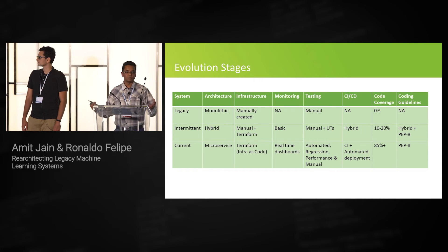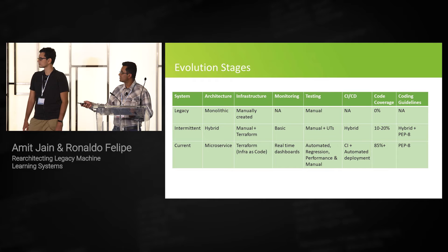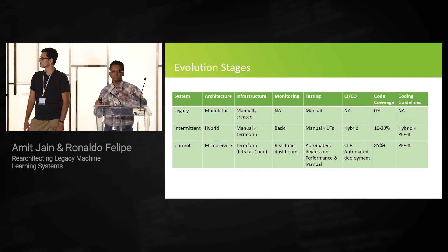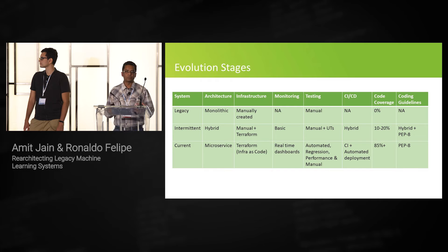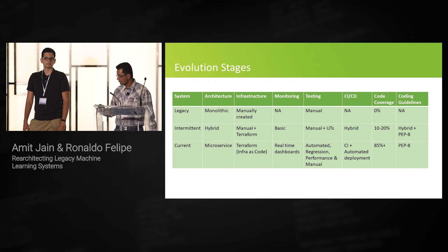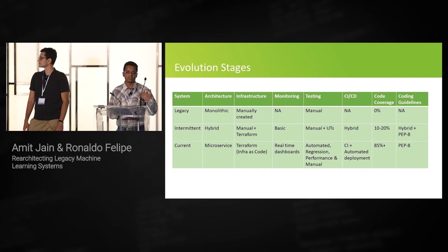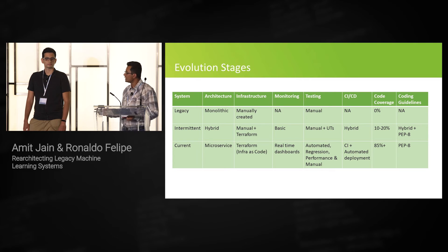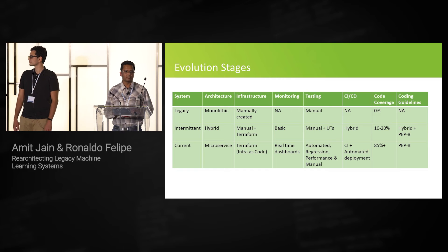For infrastructure: initially most of it was manually created. In the intermittent stage, we had the legacy manual infrastructure plus we started doing a lot of Terraform code - basically infrastructure as code, so you can recreate your infrastructure in any environment. For monitoring, there was no monitoring of the legacy system in the sense of how is your model doing over time, how is your API performing, how many HTTP 500 errors are coming, is your API down, are your batch jobs failing. In the intermittent stage, we had some basic monitoring on the new service API responses and batch jobs.